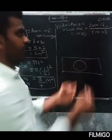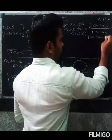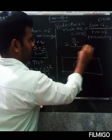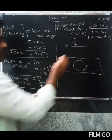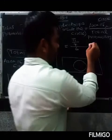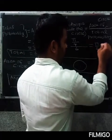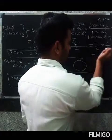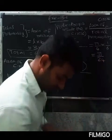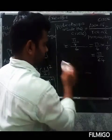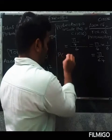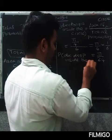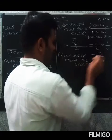The probability of the die landing inside the circle equals area of circle divided by total area. So that is (pi/4) divided by 6, which equals pi/4 multiplied by 1/6, giving 5 by 24. Therefore, the probability of the die dropping inside the circle is equal to 5 by 24. Thank you.